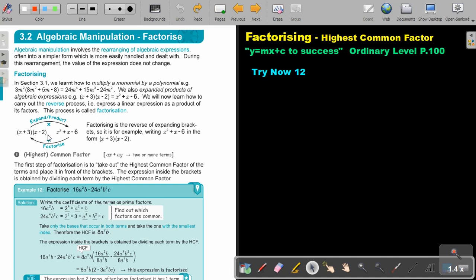In section 3.1, we learned how to multiply a monomial by a polynomial. We also expanded products of algebraic expressions, two brackets. We will now learn how to carry out the reverse of this process. For example, expressing a linear expression as a product of its factors. So if I must multiply out the brackets, then we will say find the product or expand. But if I give you this and I want you to go back to the brackets, I will say factorize.